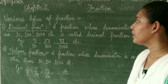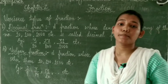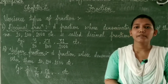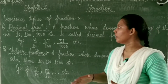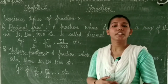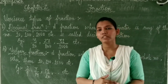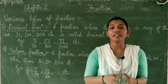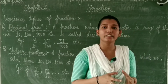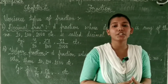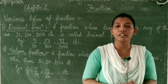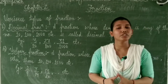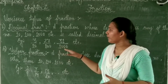So let us study the various types of fraction. What are the different types of fraction? As we have seen 3 upon 7, so how will we classify which kind of fraction it belongs to?